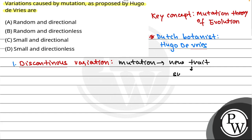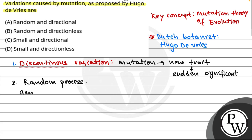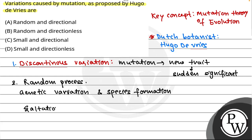He said that this is a random process. Mutation is a random process. He also emphasized that mutation plays a big role in genetic variation and species formation. He used the word 'saltation,' which means a single-step, large mutation.